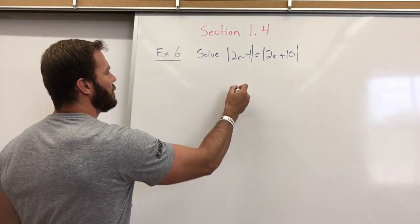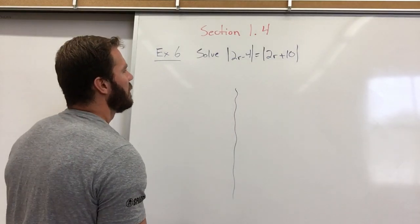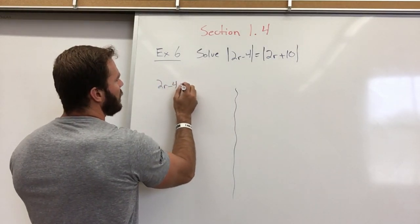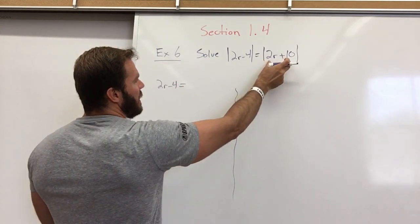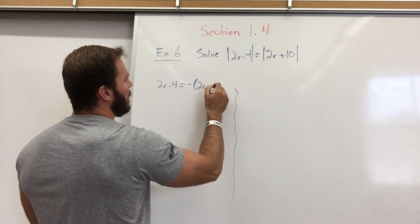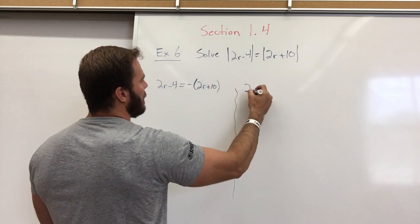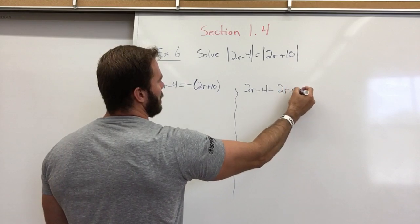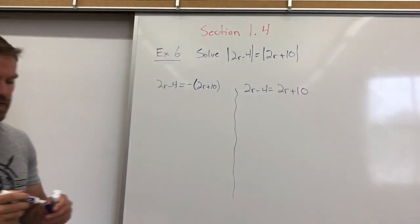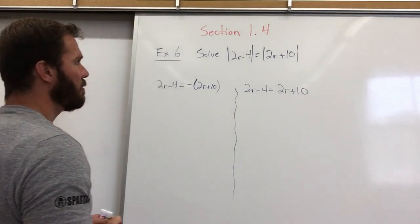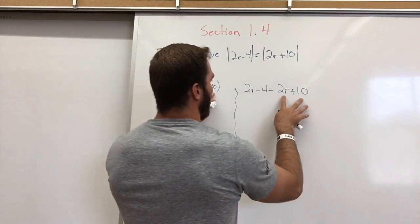We are going to have our two different equations. One is going to be 2r minus 4 equals, you take the negative of that whole thing. The other one is you're going to have it the positive. So you take the first part, give you the absolute values, and set them equal to the second part, the negative and the positive.